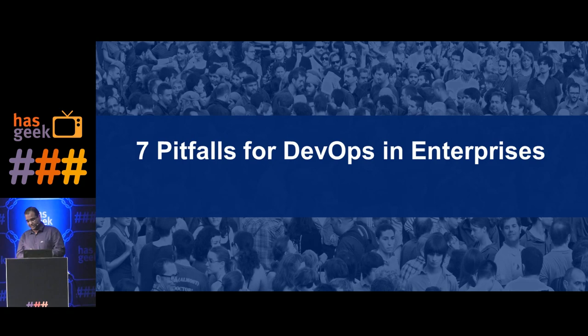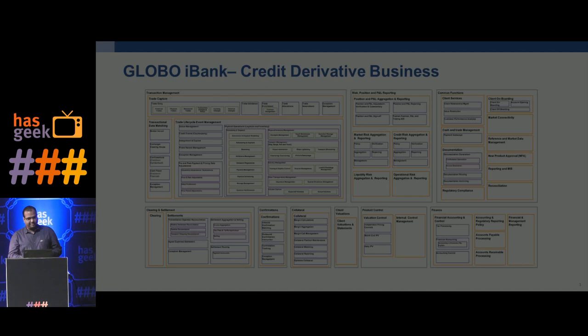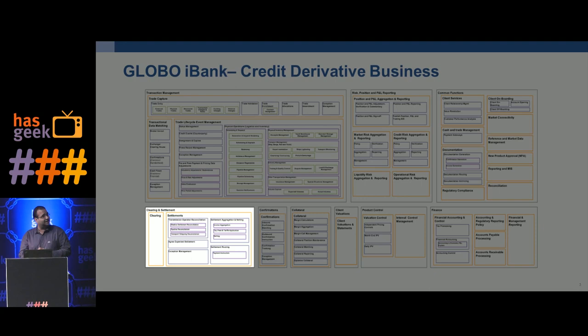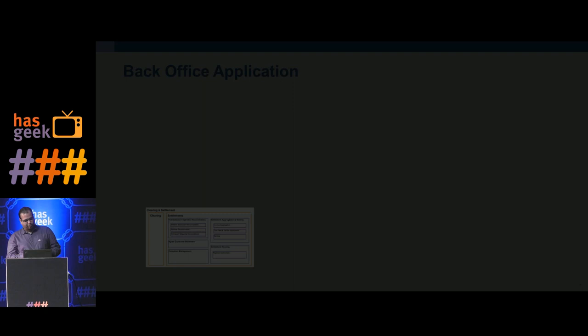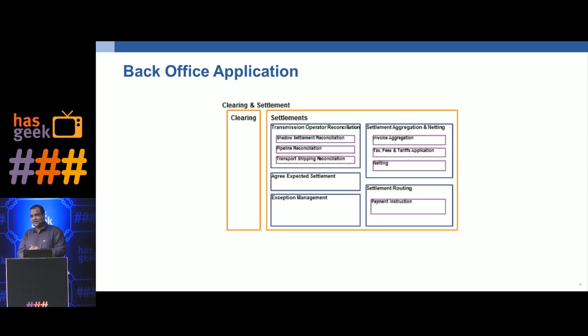Before I get started, I just wanted to introduce the problem statement. Let's call the bank a 'global iBank' because I can't use the client's name. We were working for the credit derivative business for this bank, and a small portion of that was the clearing and settlement function. Settlement is the process where cash flows generated from executing a trade — one-time or periodic, across multiple currencies and countries — are actually settled with your bank.